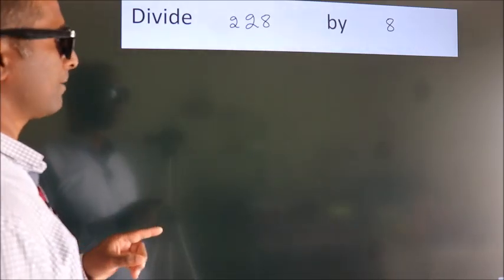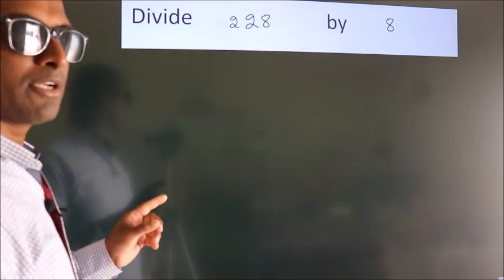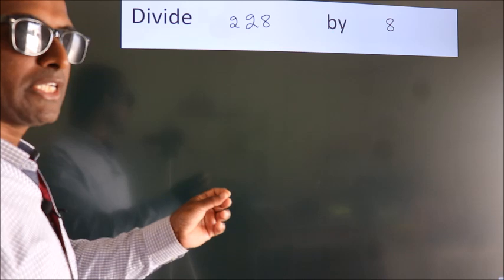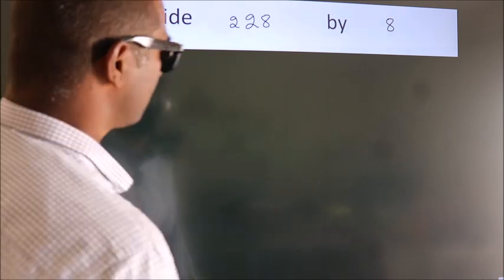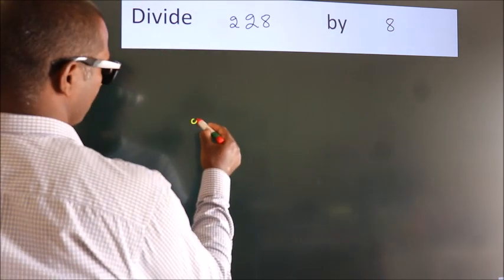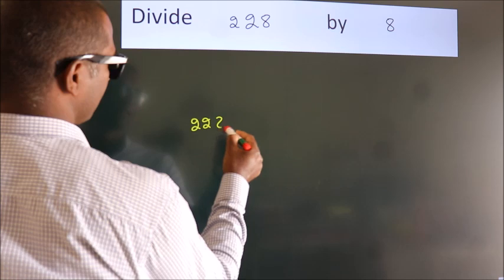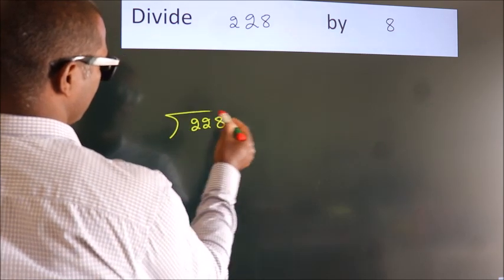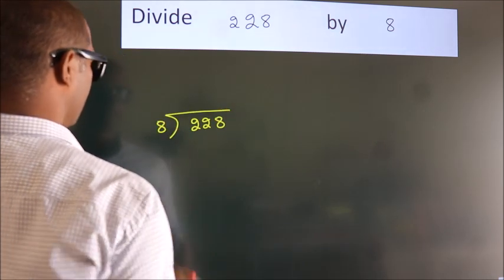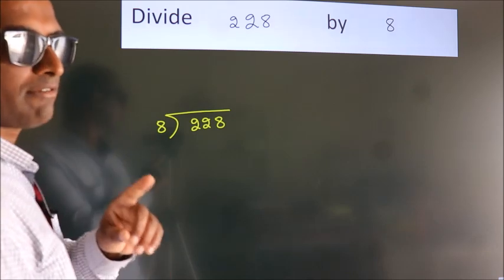Divide 228 by 8. To do this division, we should frame it in this way: 228 here, 8 here. This is your step 1.